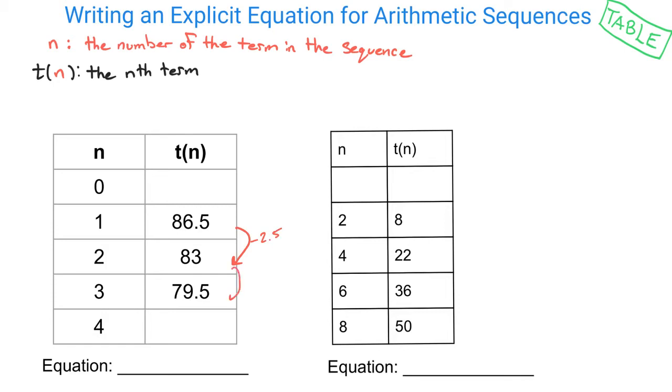And you notice if you subtract 2.5 again, you'll get down to 79.5. So if you subtract 2.5 another time, then you're going to get down to 77, and that would be your fourth term.